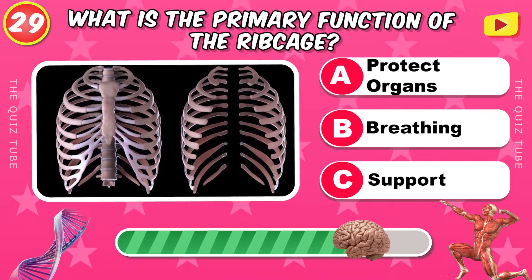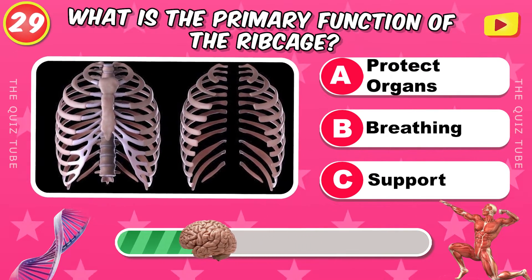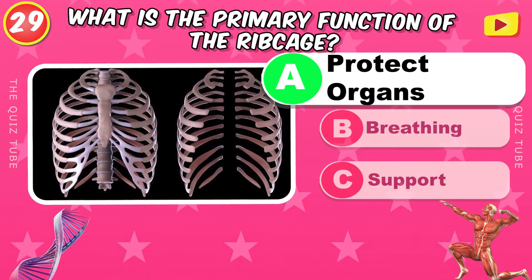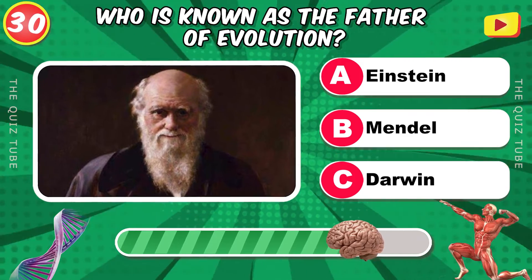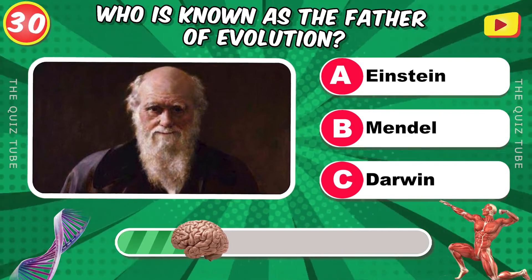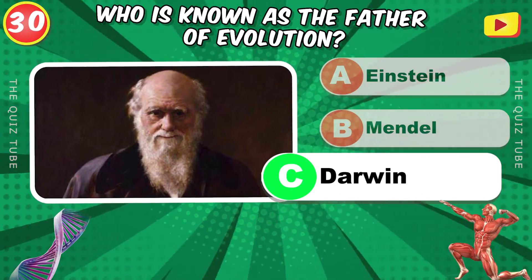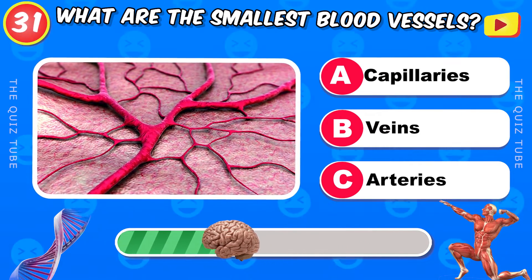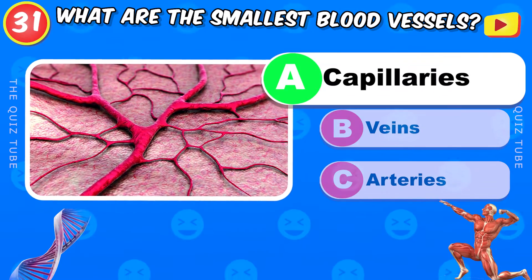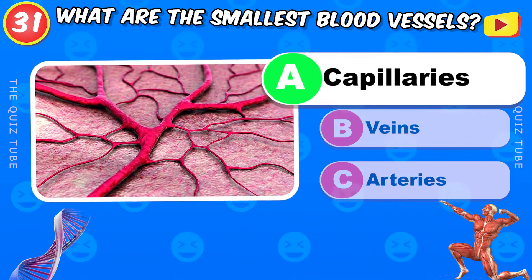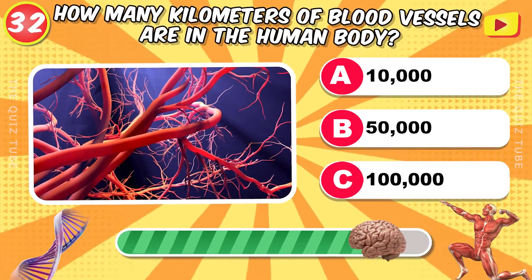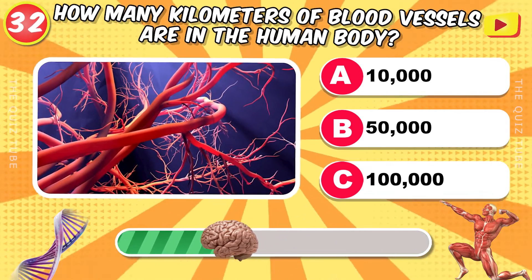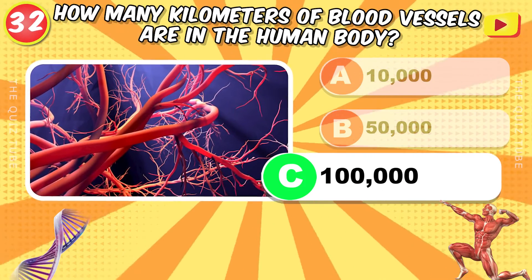What is the primary function of the rib cage? To protect organs. Who is known as the father of evolution? Darwin. What are the smallest blood vessels? The capillaries. How many kilometers of blood vessels are in the human body? 100,000 kilometers.